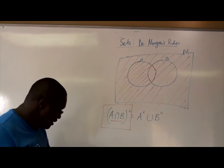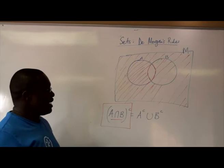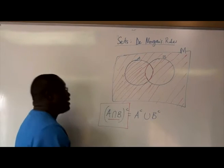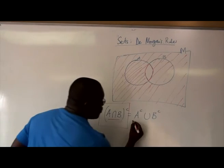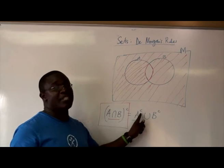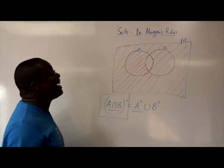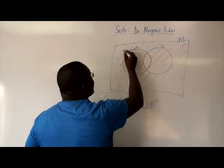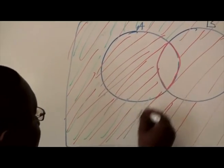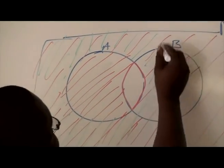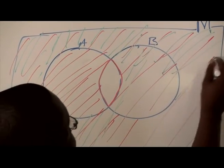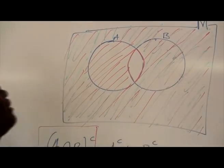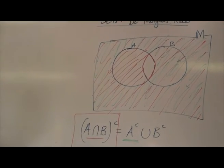Now let me use the green pen to see if the right-hand side will be similar. The first part is A complement — not in A. Everything that is not in A, I am shading it in green. I've shaded everything that is not in A in green.